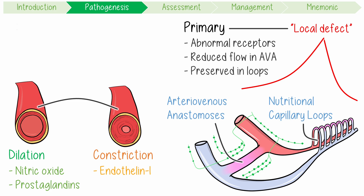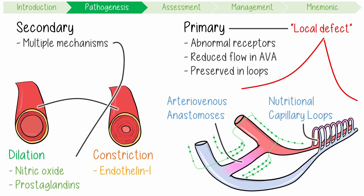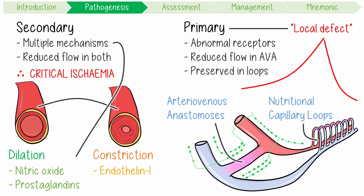Thus, patients with primary RP don't develop critical ischemia. Secondary RP results from various diseases, so multiple different mechanisms might be involved. In secondary RP, patients exhibit both reduced digital blood flow via AVAs and a reduction in those nutritional capillaries. Thus, they are more likely to develop critical ischemic events.